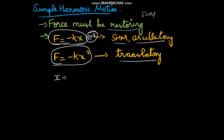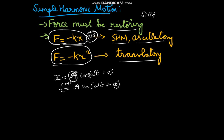The displacement in simple harmonic motion is represented by x = A cos(ωt + ψ) or A sin(ωt + ψ). Here, A is the amplitude — amplitude is nothing but maximum displacement. Omega (ω) equals 2πf, which equals 2π divided by T, where f is frequency and T is the time period. ψ is the phase difference or phase angle.